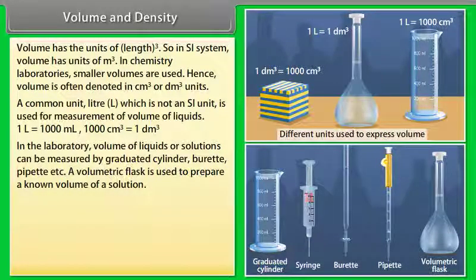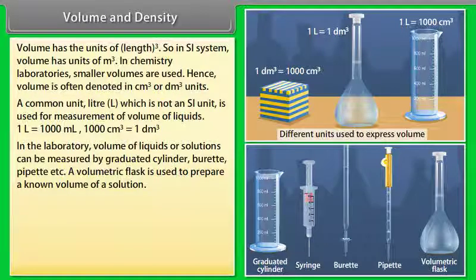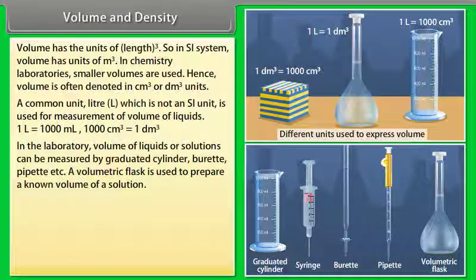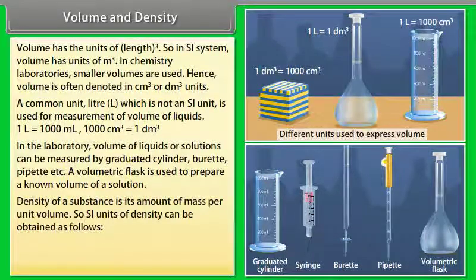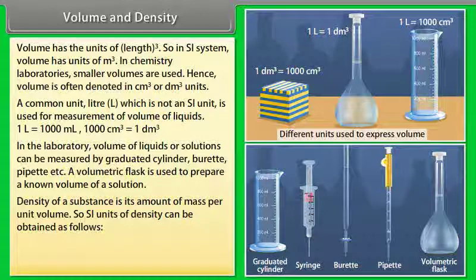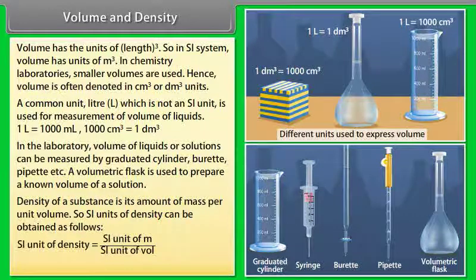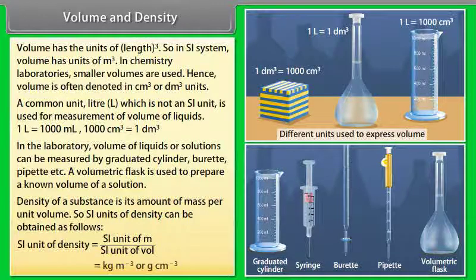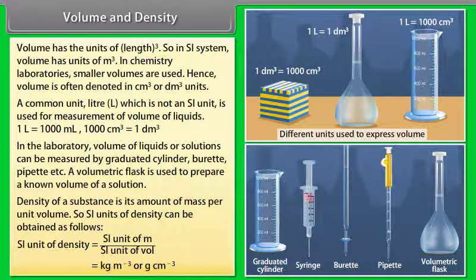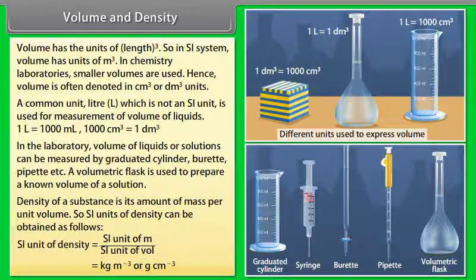In the laboratory, volume of liquids or solutions can be measured by graduated cylinder, burette, pipette, etc. A volumetric flask is used to prepare a known volume of a solution. Density of a substance is its amount of mass per unit volume. So, SI units of density can be obtained as follows: SI unit of density is equal to SI unit of mass upon SI unit of volume, which is equal to Kg m^-3 or g cm^-3.